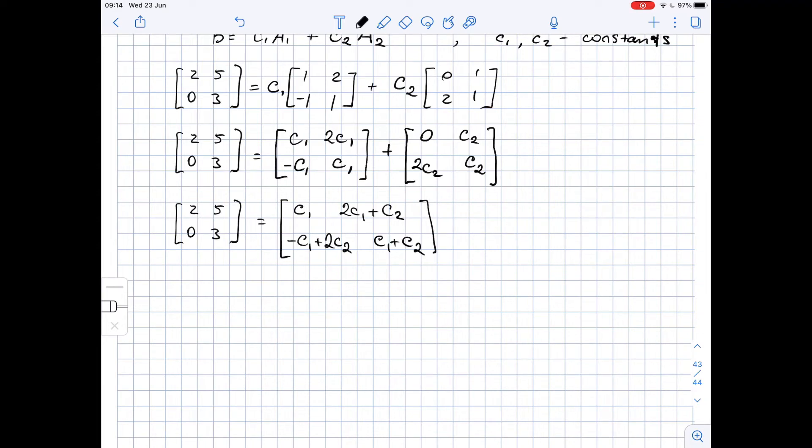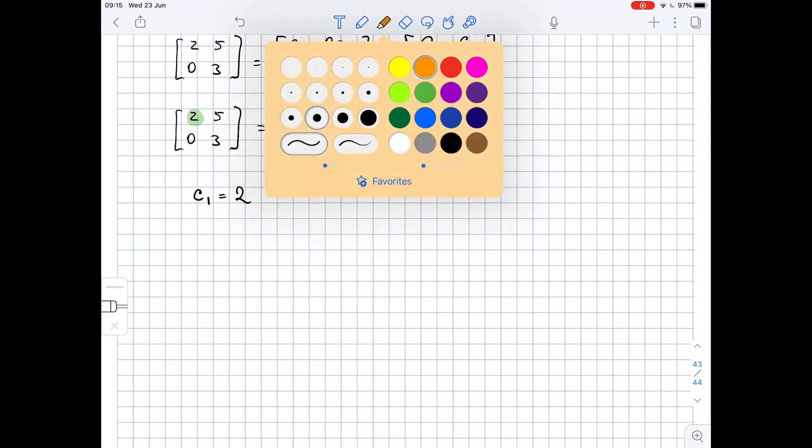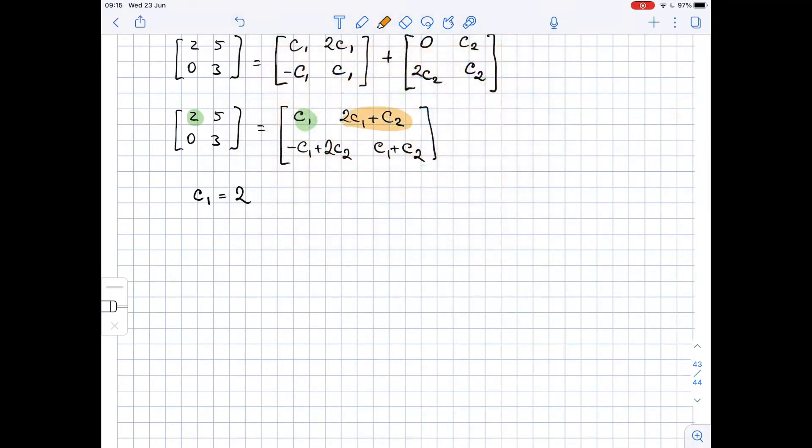Now in order for two matrices to be equal, all of their entries need to be equal, so that means that C1 equals 2, then 2C1 plus C2 equals 5.